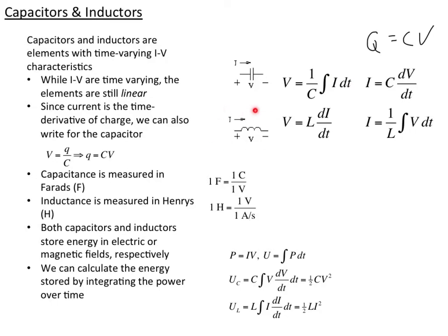Inductors are similar. Here's what the inductor looks like — it looks like a coil. There's a current going in and a voltage drop across it. In this case, the voltage is the derivative of the current, so when the current is changing we get a voltage, and the current is proportional to the inductance times the integral of the voltage change. So the integrals and derivatives change places in the inductor versus the capacitor.